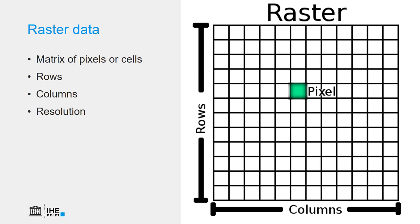Basically, raster data is a big table or a matrix consisting of cells. We call the cells pixels, which comes from the English words picture and element — it's a concatenation of those two words. It's defined by a number of rows and a number of columns and the size of a picture's resolution.